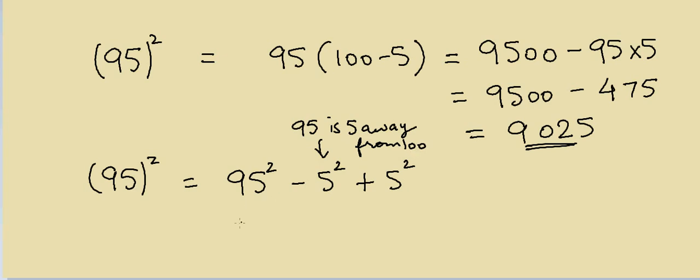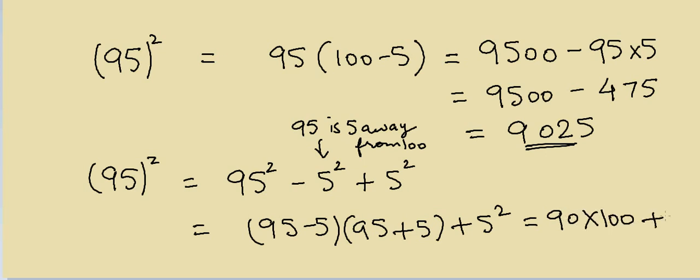What we can do now is write this as (95 - 5) times (95 + 5) plus 5². If you remember, a² - b² equals (a + b)(a - b). This makes it simpler: 90 times 100 plus 5².